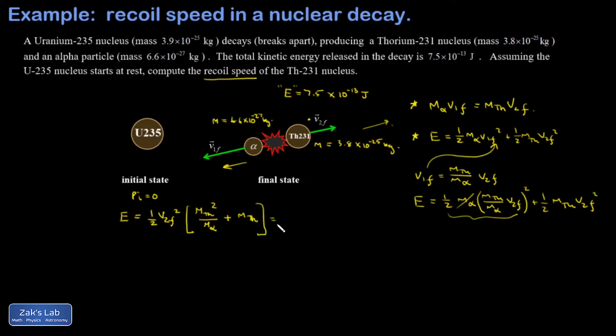I could factor out one factor of the thorium mass and I end up with one-half V2 final squared mass of the thorium nucleus times M thorium over M alpha plus one. I think it's time to solve for V2 final.